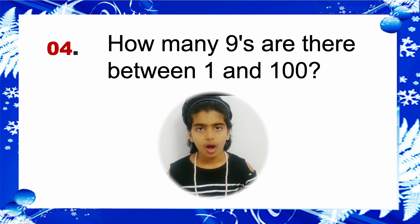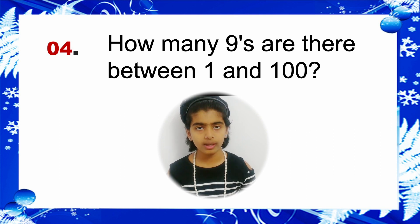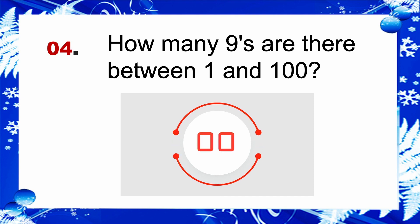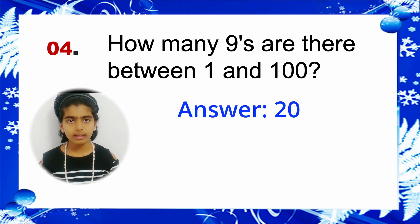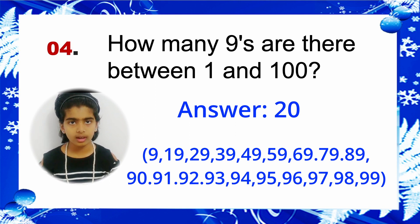Riddle 4: How many 9's are there between 1 and 100? Answer: 20. 9, 19, 29, 39, 49, etc.